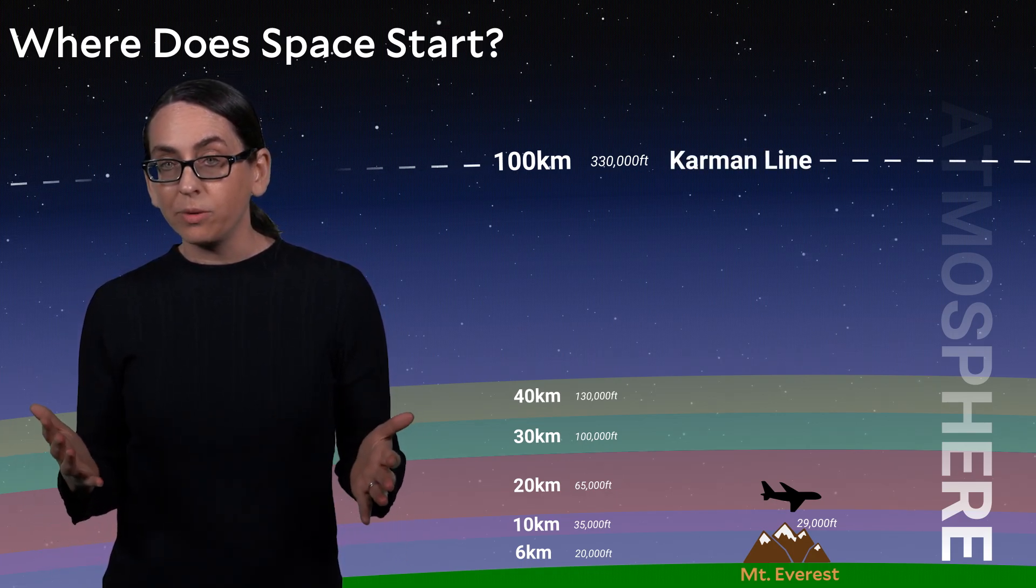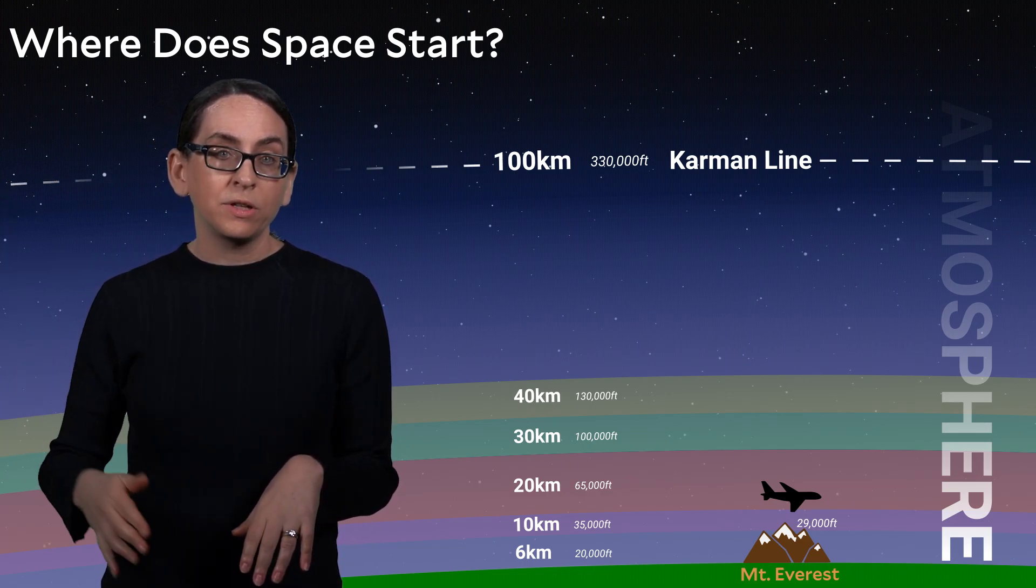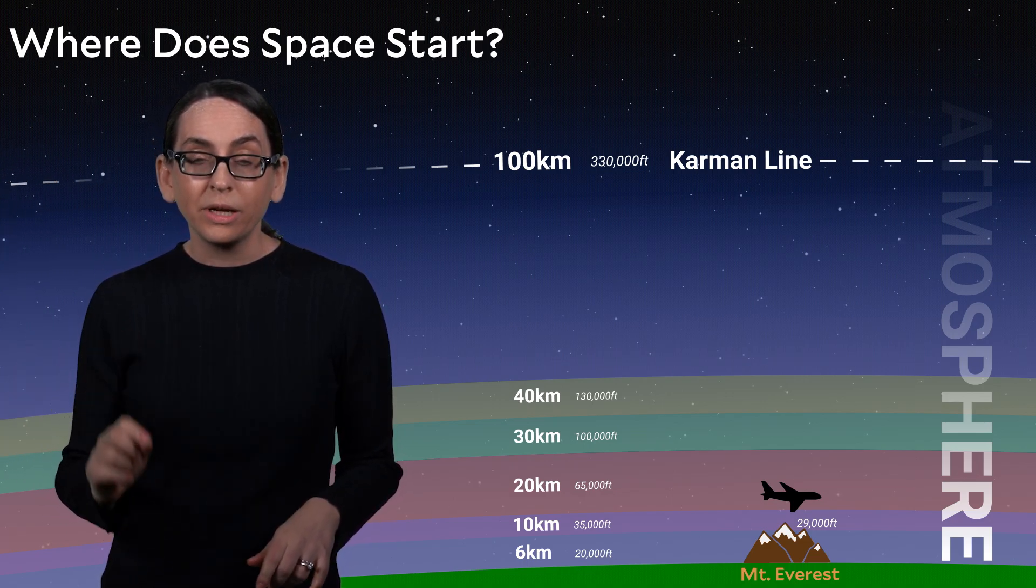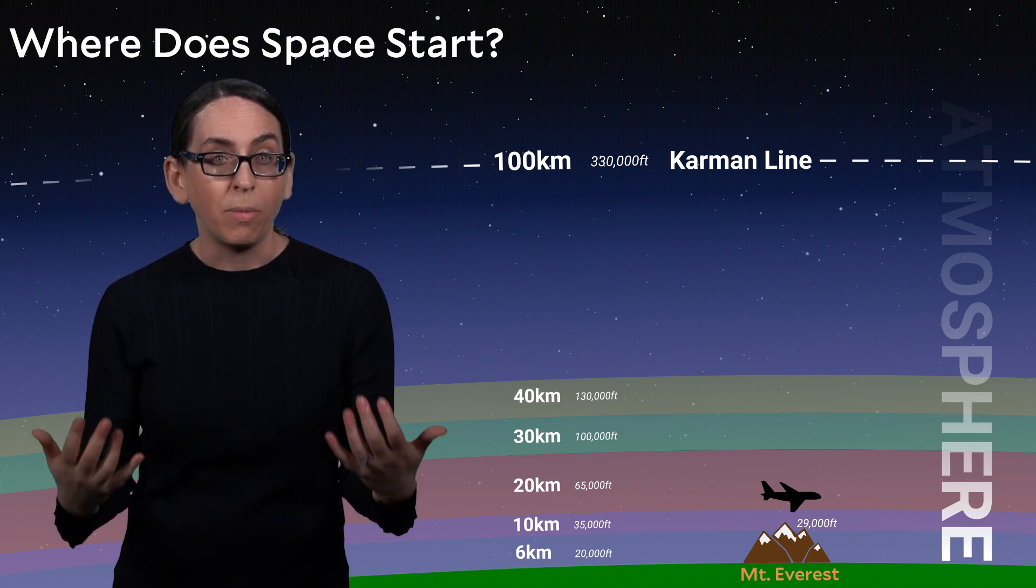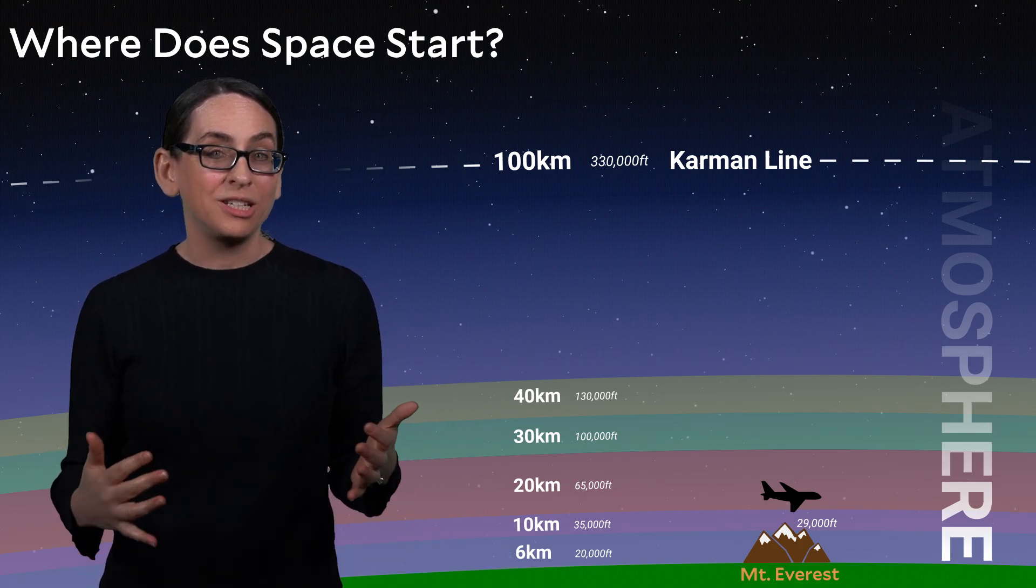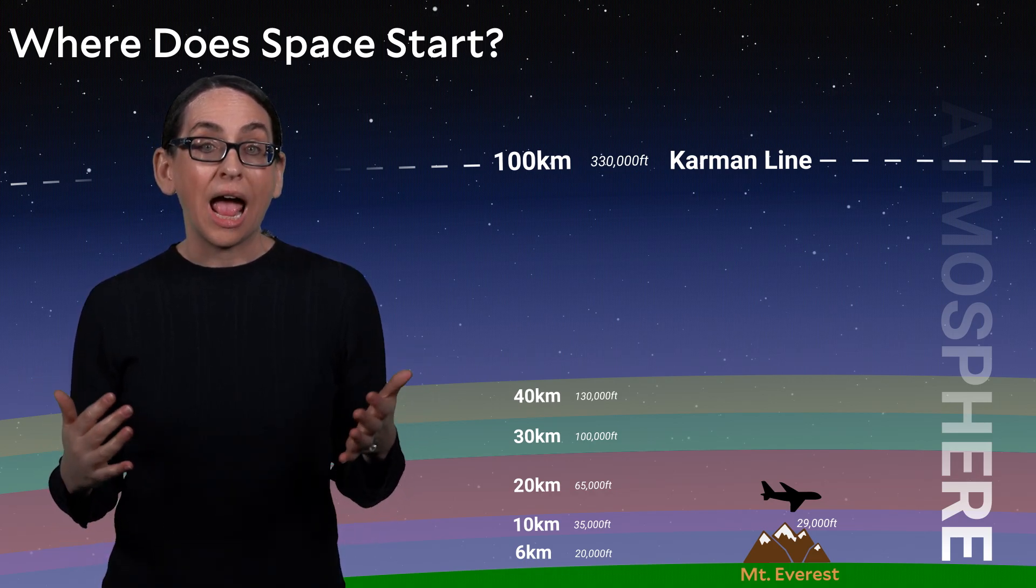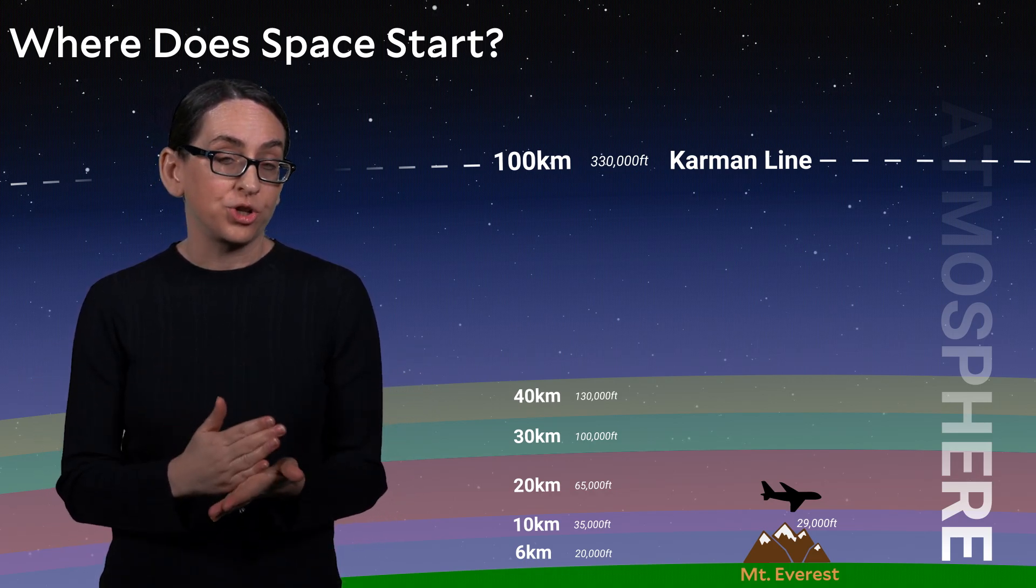It's a somewhat arbitrary point in terms of physics. There's still trace atmosphere well above this point, but this limit is really important in terms of policy. Airplanes flying over countries are subject to different rules and regulations compared to satellites going over different countries, and that switch happens at exactly 100 kilometers.